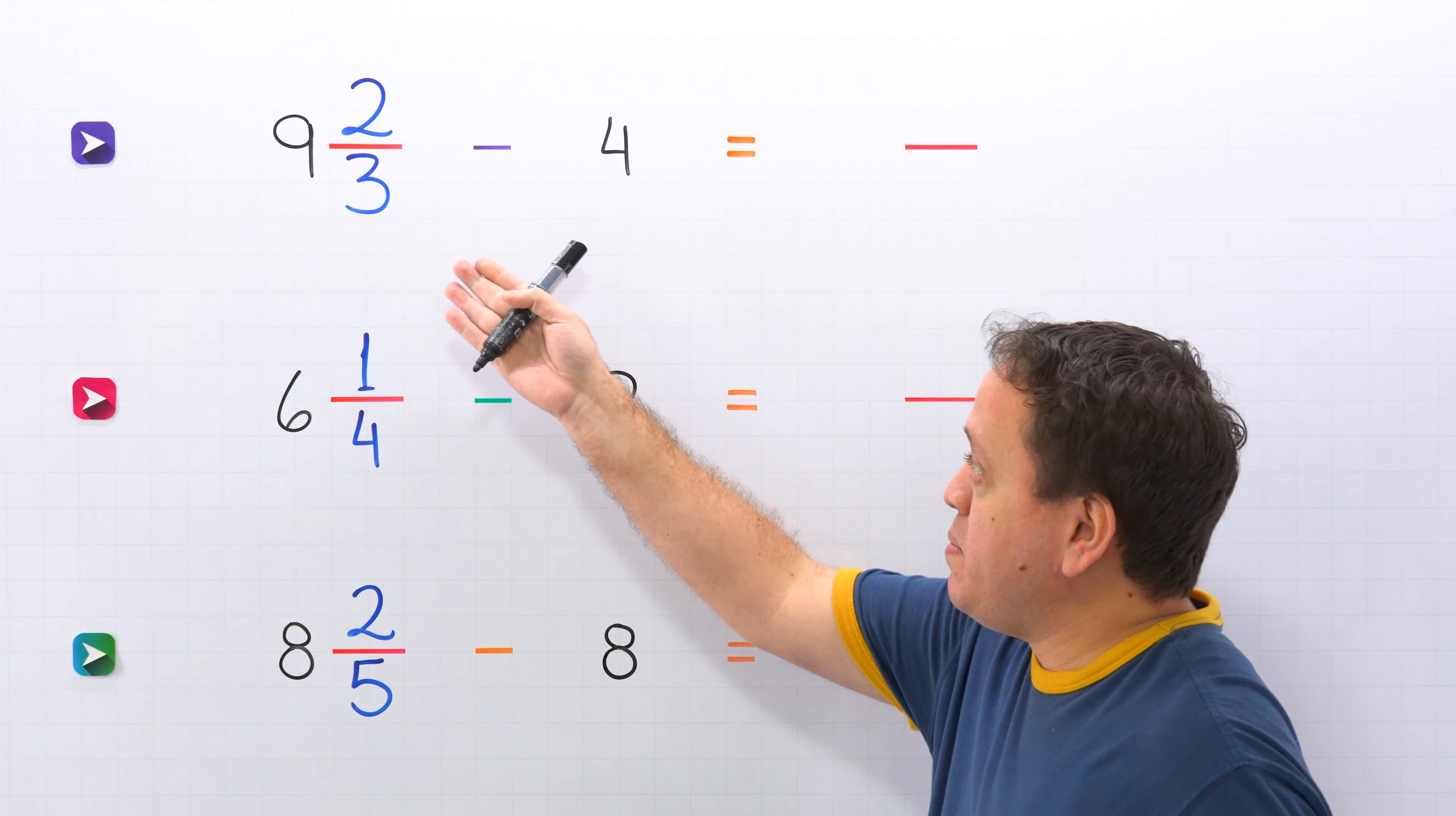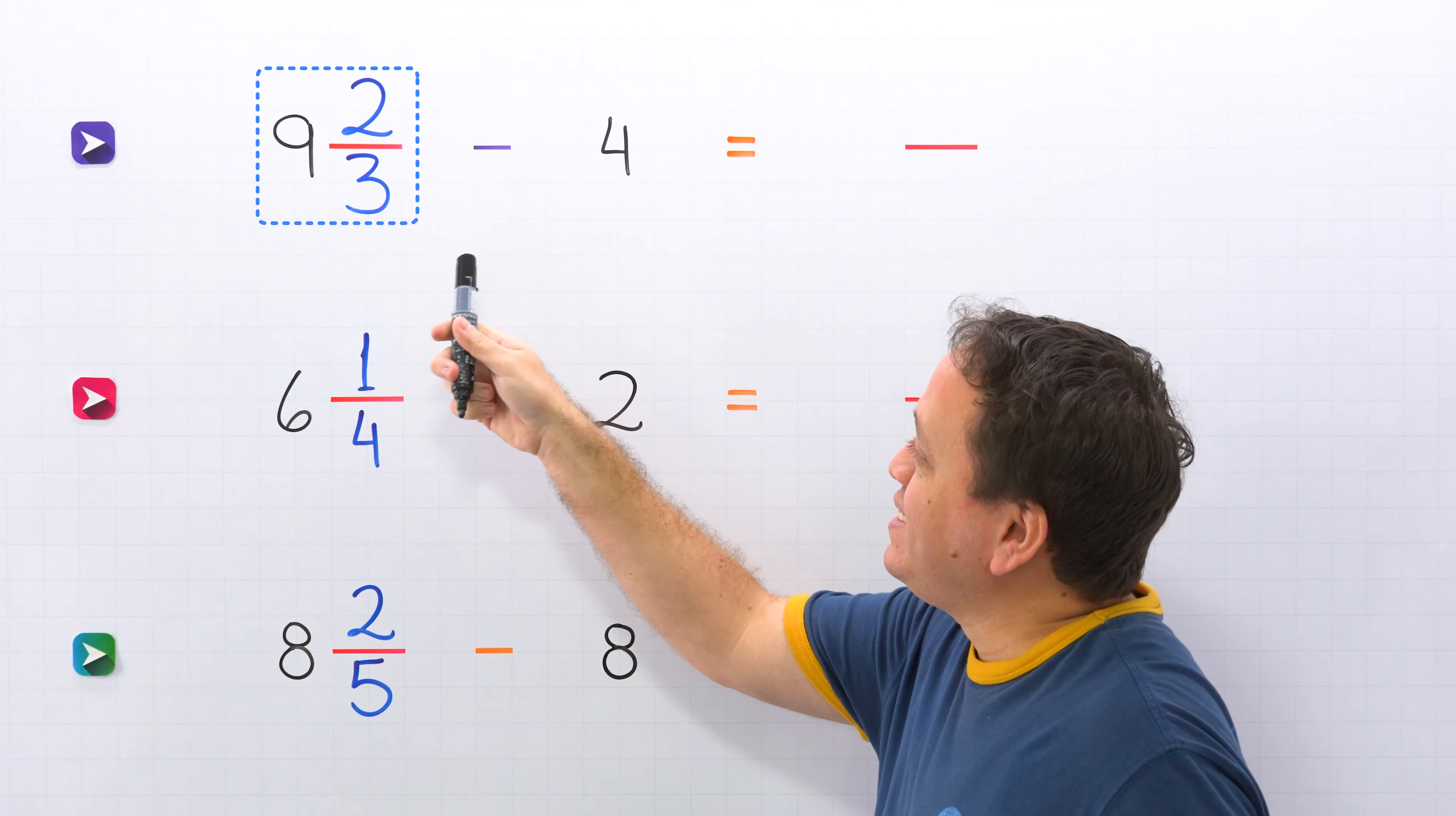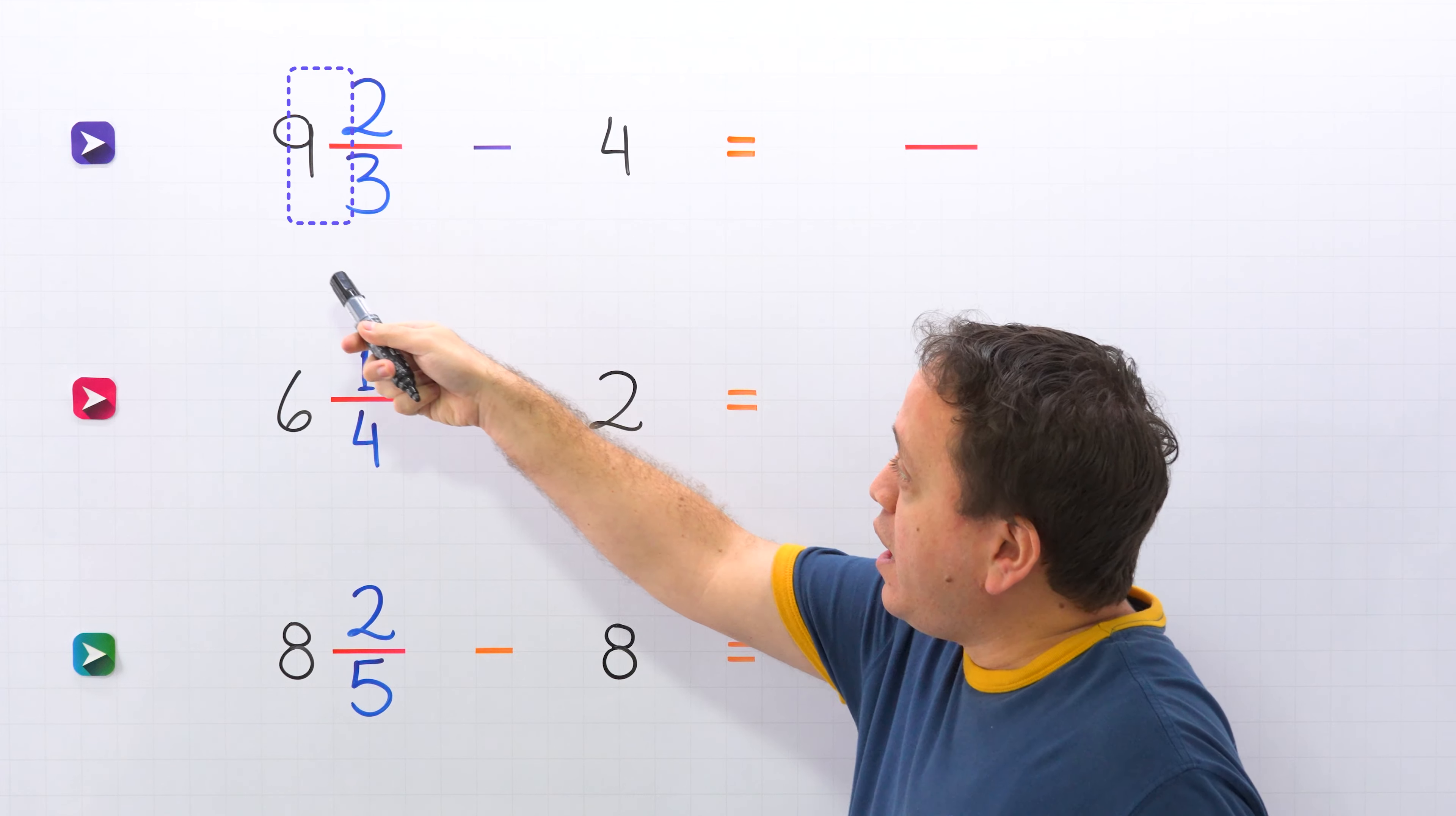Before getting into it, we need to remember that a mixed number, like this one, is the sum of a whole number and a proper fraction.